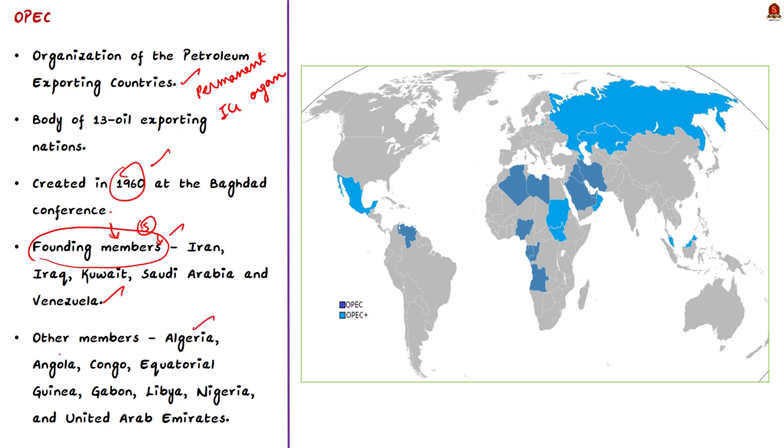The other members of the OPEC are Algeria, Angola, Congo, Equatorial Guinea, Gabon, Libya, Nigeria and United Arab Emirates. Note that earlier Qatar was also a member but it left OPEC on January 2019. Also note that the most recent country to exit OPEC is Ecuador which left OPEC in January 2021. Also, other oil exporting nations can join OPEC meetings as observers.